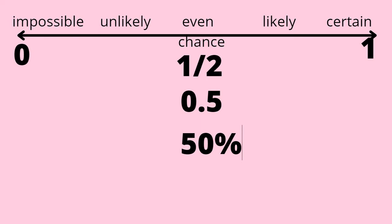When the probability is between zero and one-half, then the event is unlikely to happen. And if the probability is between one-half to one, then the event is likely to happen.